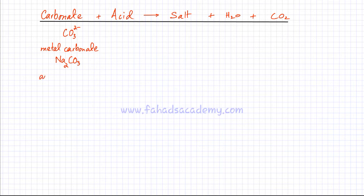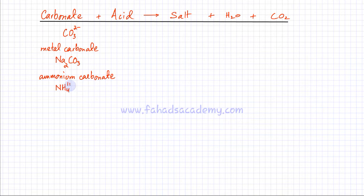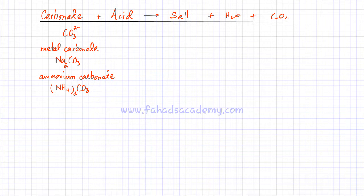You also have ammonium carbonate. Ammonium is also a positive ion that can be attached to a carbonate ion to form a compound containing carbonate. NH₄ is 1+, and CO₃ is 2−. Using the crisscross method, the formula is (NH₄)₂CO₃ — two ammonium ions and one carbonate ion.